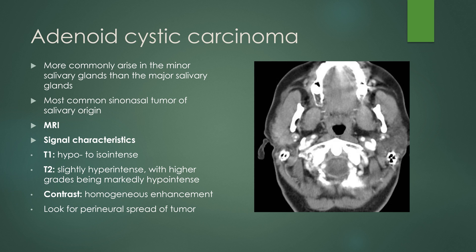Adenoid cystic carcinoma more commonly arises in the minor salivary glands than the major salivary glands, and is the most common sinonasal tumor of salivary origin. On MRI, these lesions tend to be hypo- to iso-intense on T1, slightly hyperintense on T2, with higher-grade lesions being markedly hypointense — just like mucoepidermoid. There tends to be homogeneous enhancement, especially with smaller lesions. These are ones you always want to evaluate for perineural spread of tumor, as adenoid cystic carcinoma is classic for that. On CT, you can see a subtle hyperdense mass compared to normal parotid parenchyma, and it is very infiltrative throughout the gland rather than a discrete well-circumscribed lesion.